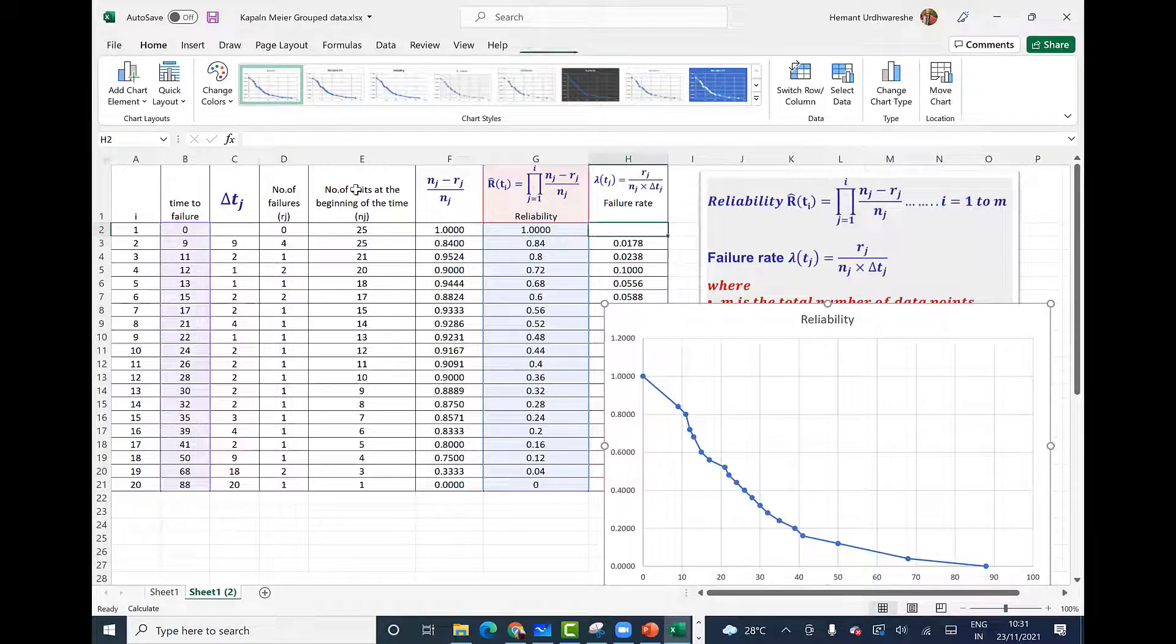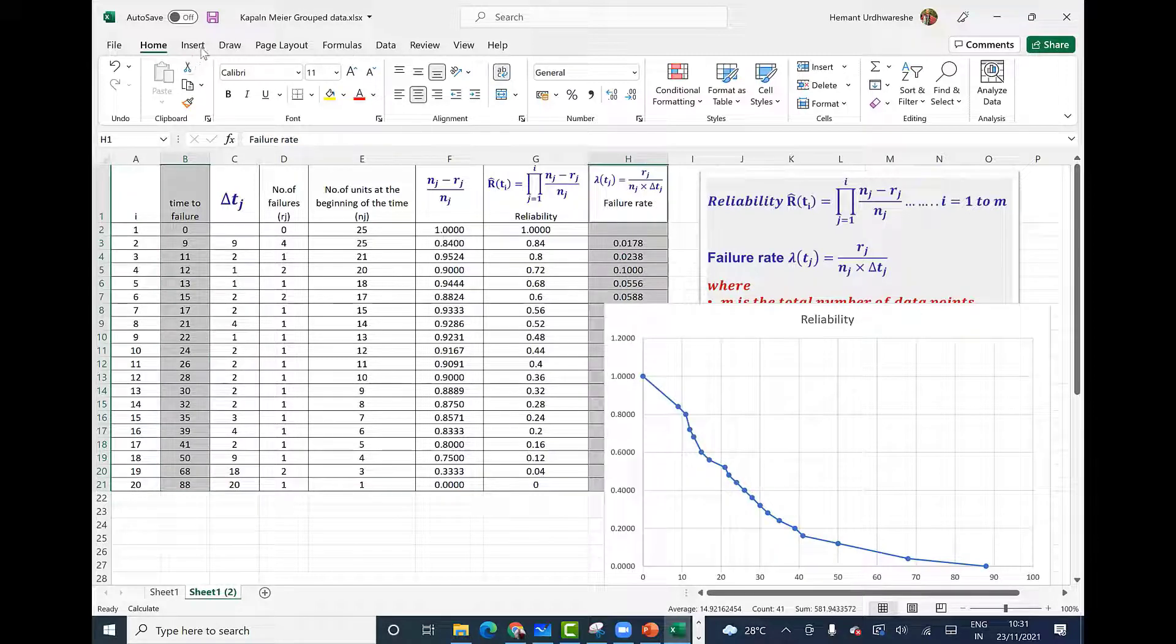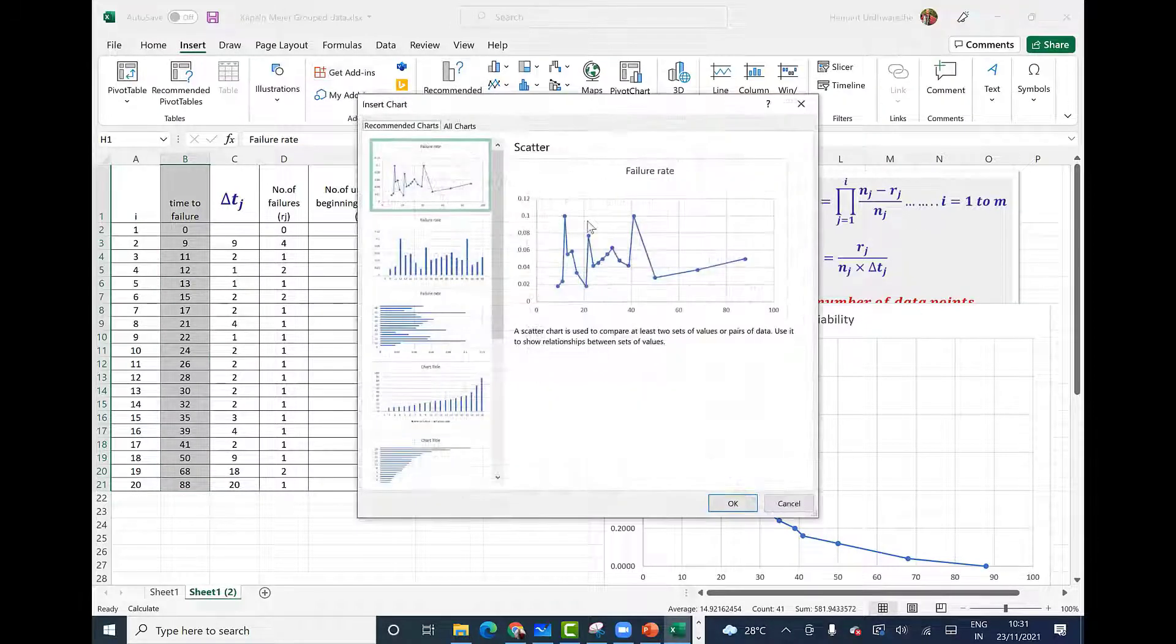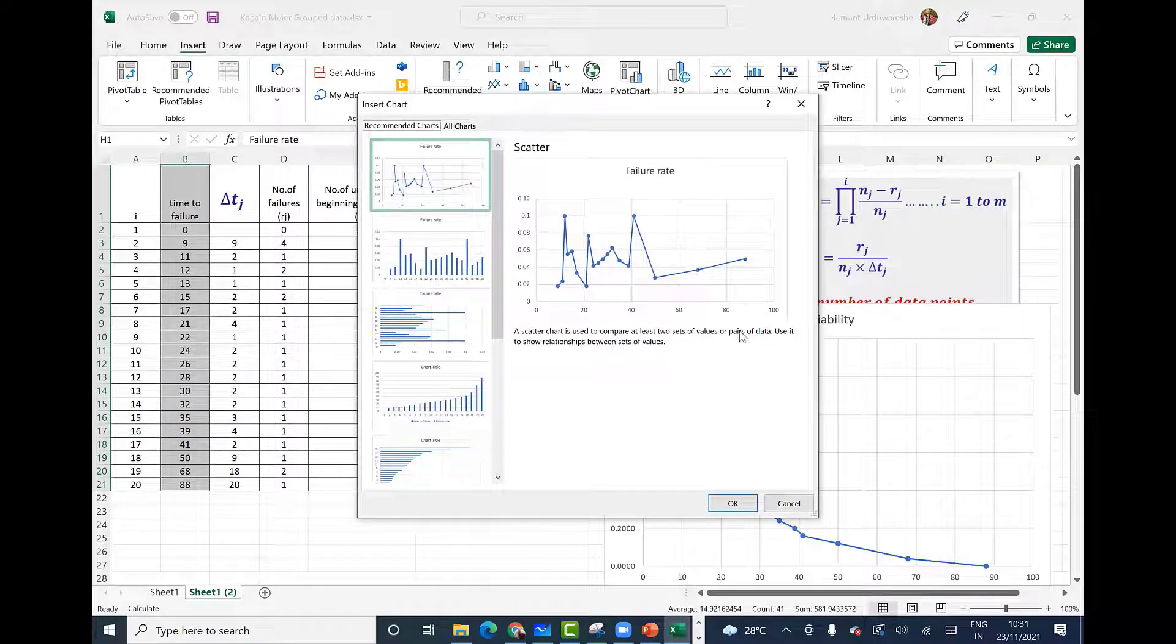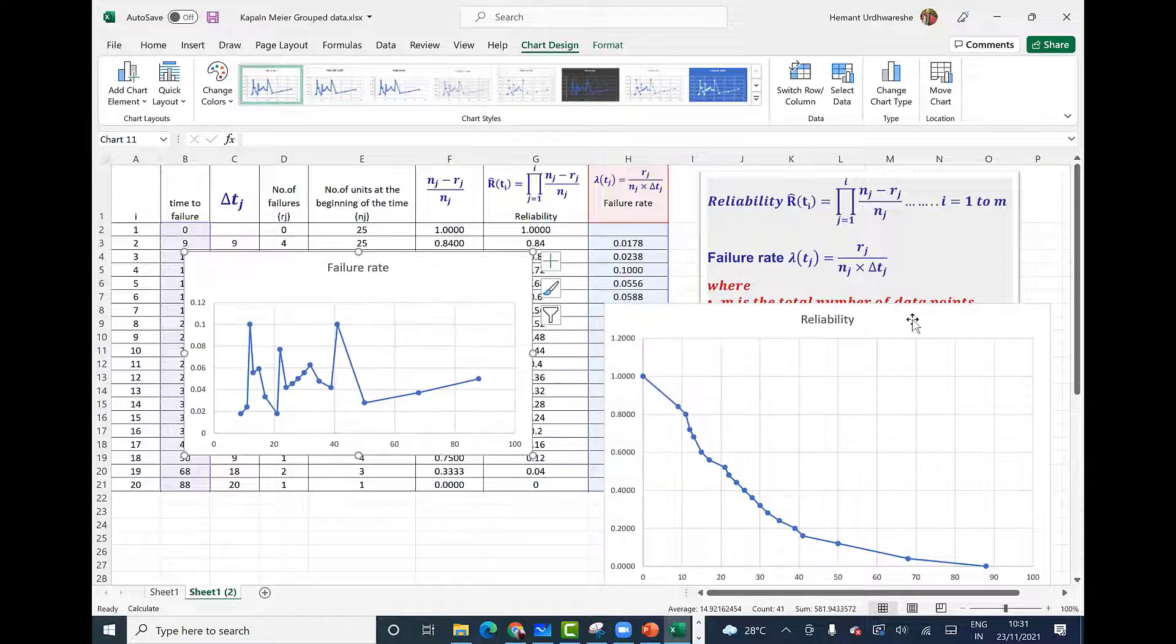I can also plot the graph of time to failure versus failure rate. So for that I select the next column. Insert recommended charts and I get the failure rate. So these are the charts for failure rate and reliability.